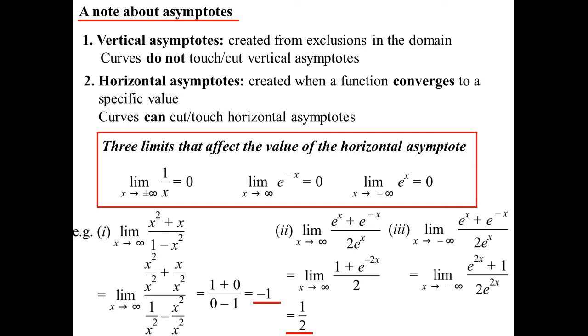And I'm left with e to the power of 2x plus 1 on 2e to the 2x. The e to the 2x's will approach zero. So I'm going to end up with 1 on zero, which is undefined. Another way of thinking about that, well if it's undefined, it's probably going off to infinity.